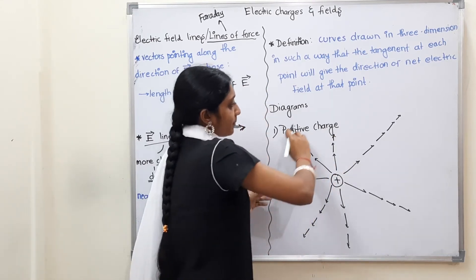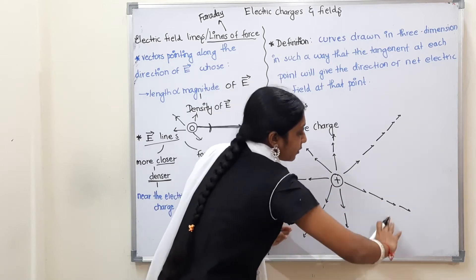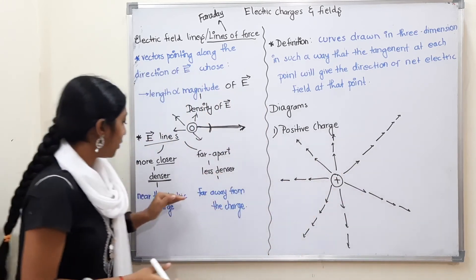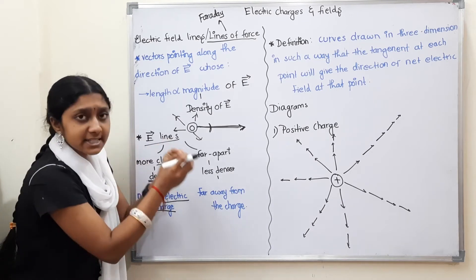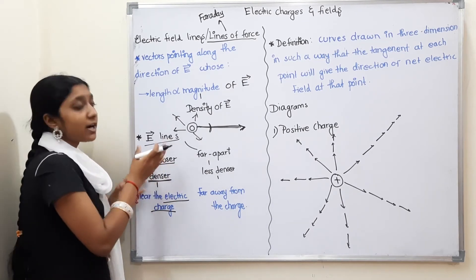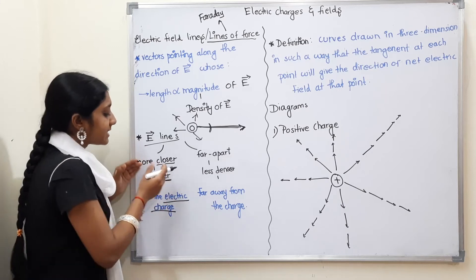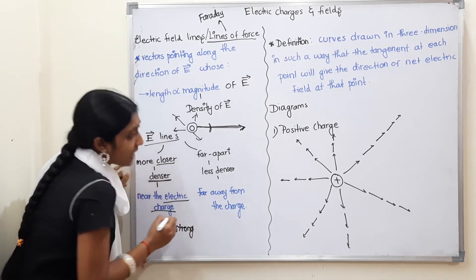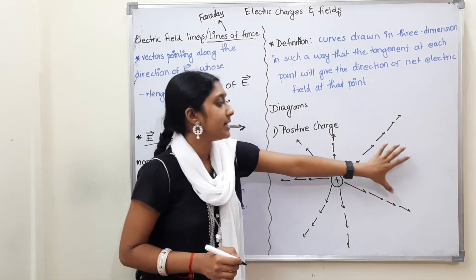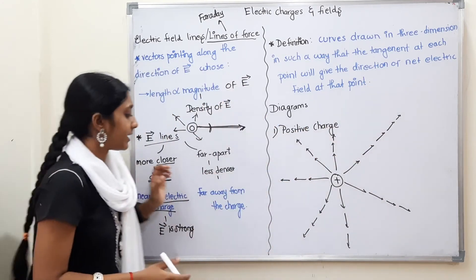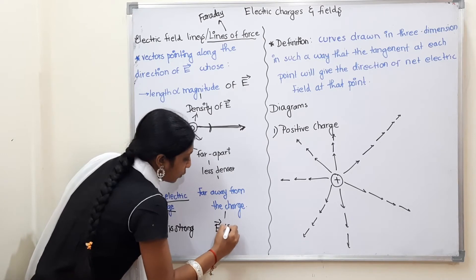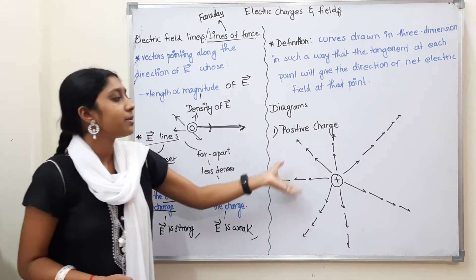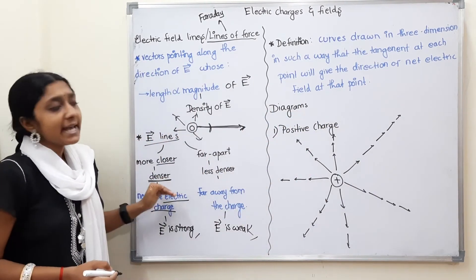Looking at the outer layer, there is a gap between one field line and another field line. Near the electric charge, the field lines are dense and close — the electric field is strong there. At a large distance, the density is less — the field lines are far apart and the electric field is weak.